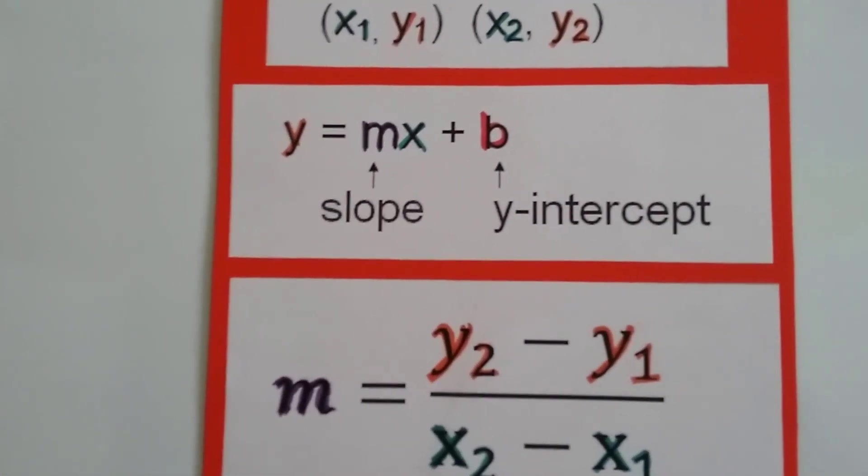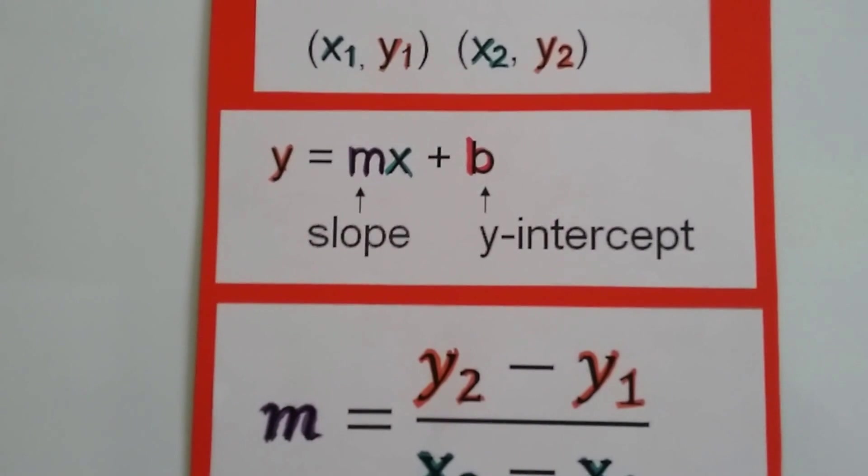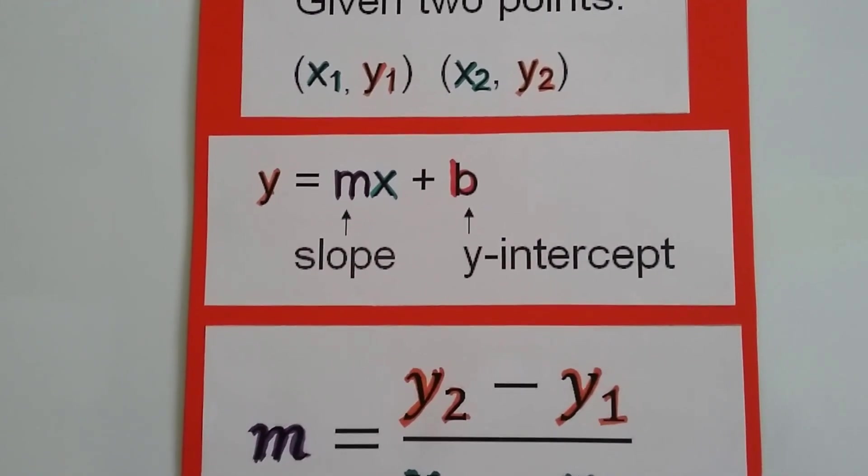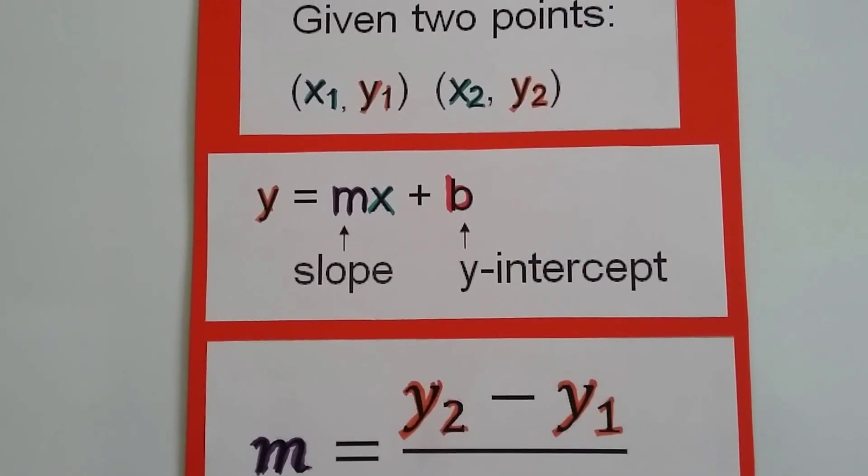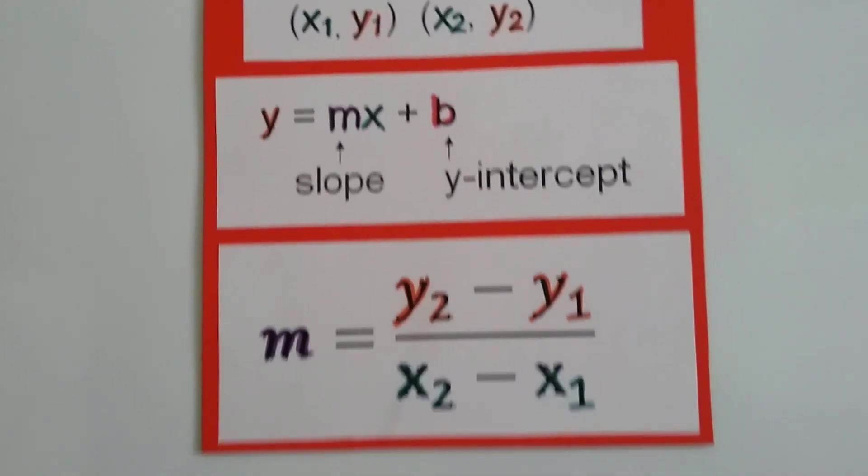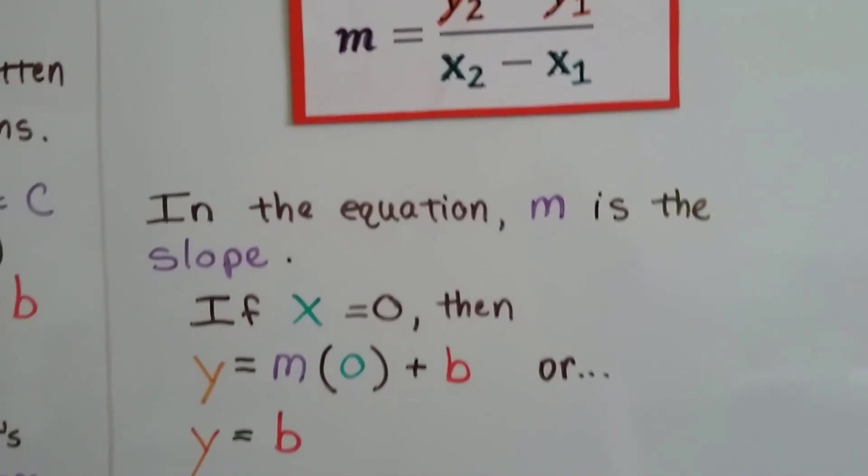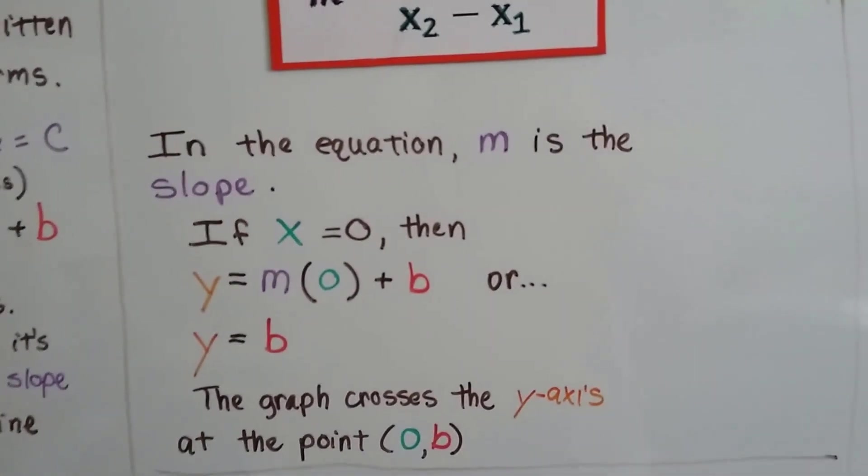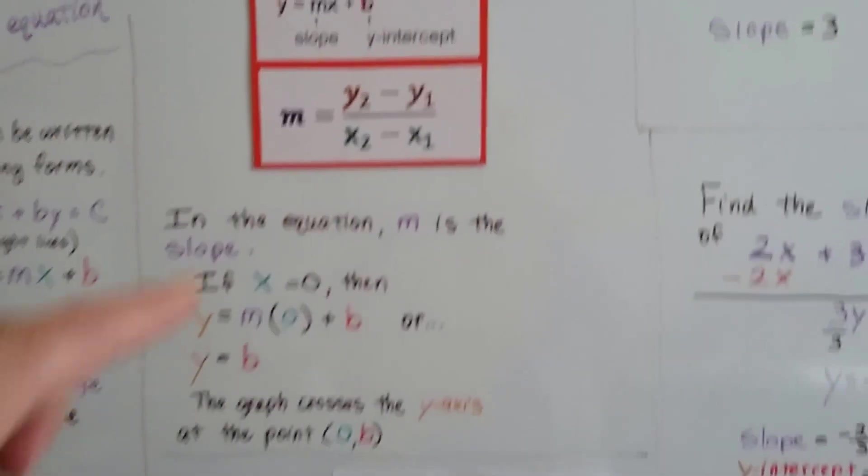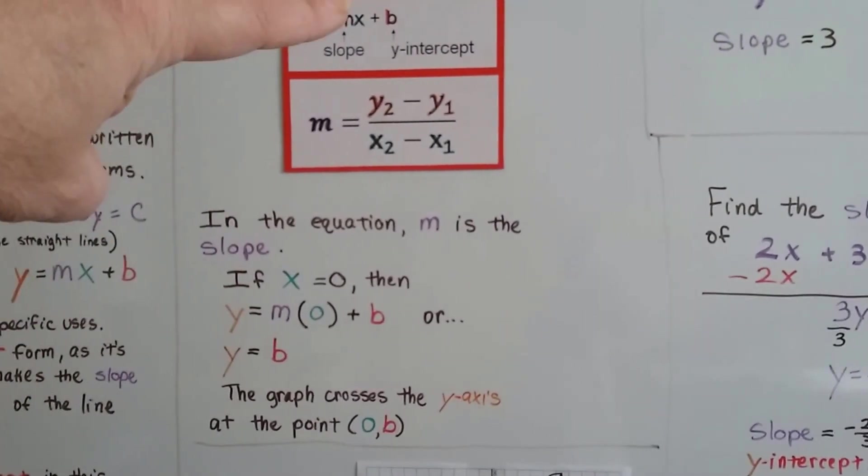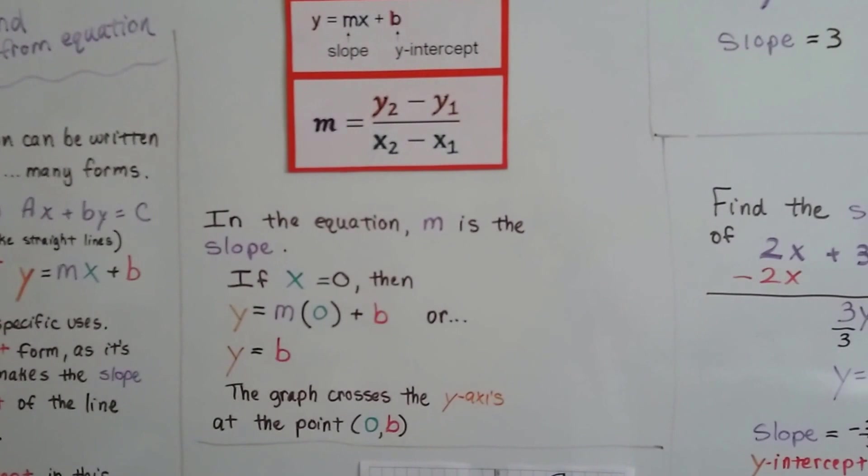So let's take a look at this. Here's the equation, y equals mx plus b. We know now from the last video that m is the actual slope. And b is the y-intercept, it's where it crosses the y-axis. So if x is 0, m times x is going to be 0, right?